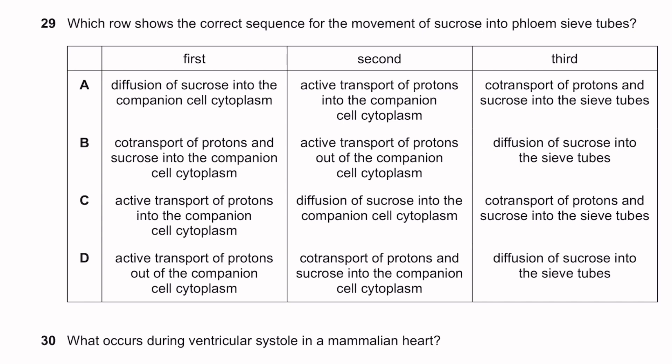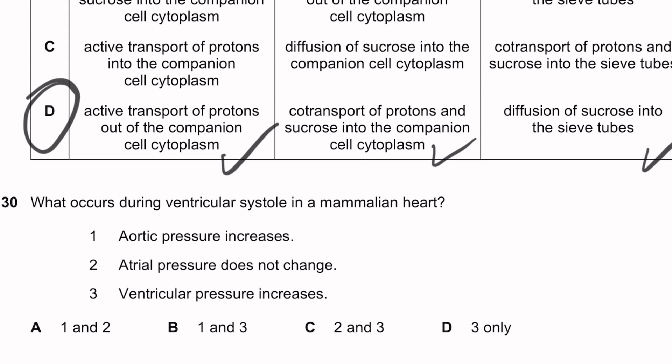Question twenty-nine: which row shows the correct sequence for sucrose movement into phloem sieve tubes? First, protons are actively transported out of the companion cell cytoplasm. Then co-transport of protons and sucrose brings sucrose into the companion cell cytoplasm. Then sucrose diffuses into the sieve tubes. That is the correct sequence. Question thirty: what occurs during ventricular systole in a mammalian heart? Ventricular pressure increases — correct. Aortic pressure increases — this happens but not at the very start of ventricular systole; the semilunar valves open only after ventricular pressure exceeds aortic pressure. Atrial pressure decreases. The answer is D (ventricular pressure increases and atrial pressure decreases).